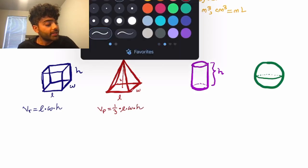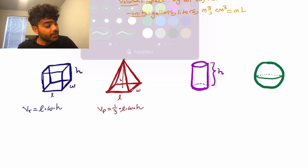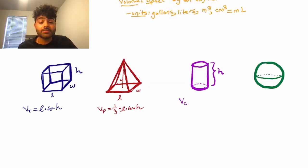Next, we have our cylinder. A cylinder has volume v sub c, which is equal to a constant pi times r squared, or radius squared, times h, which can be expanded to equal pi times r times r times h.